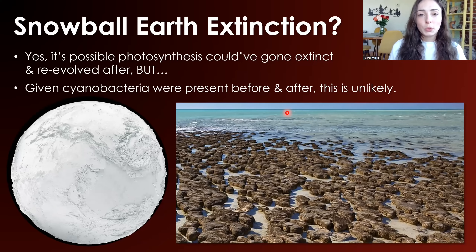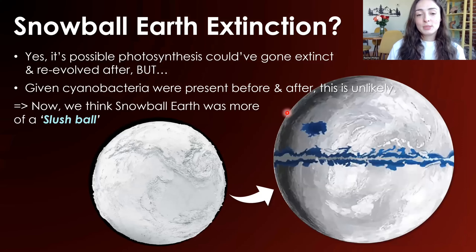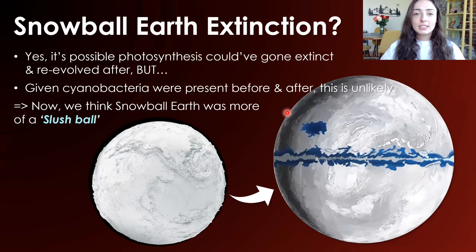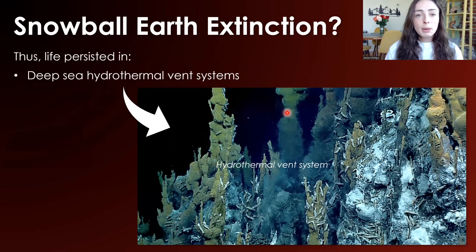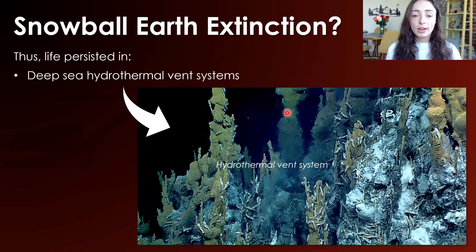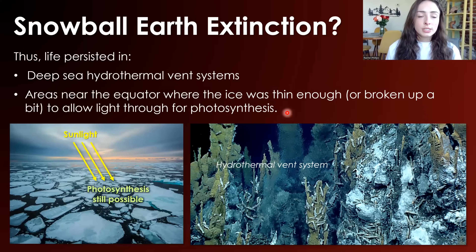This is why we now think it was more of a slushball Earth — with more slushy, broken-up ice especially near the equator — rather than a full thick ice cover around the entire globe. This would have allowed life to persist in deep hydrothermal vent systems, where microbial chemotrophs got energy from chemicals rather than light, but also in areas near the equator where ice was thin or broken up enough to allow light through for photosynthesis.